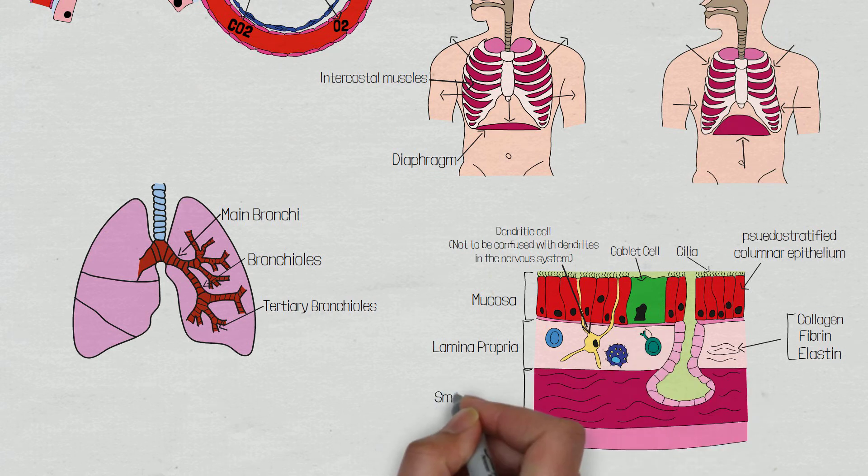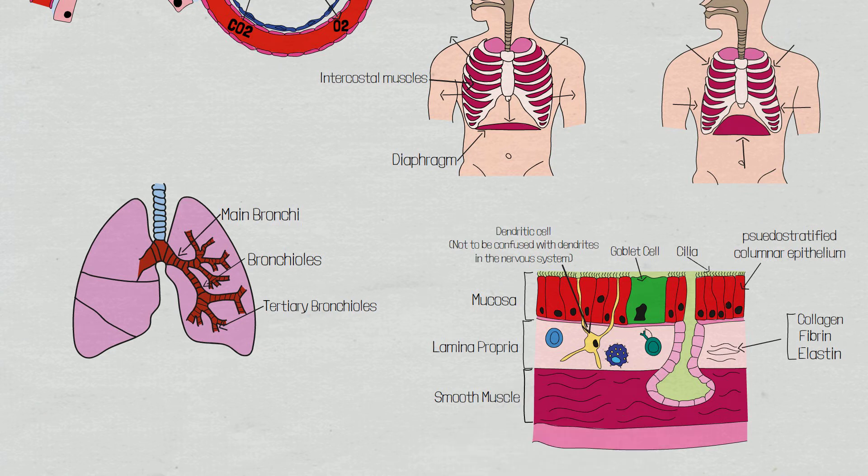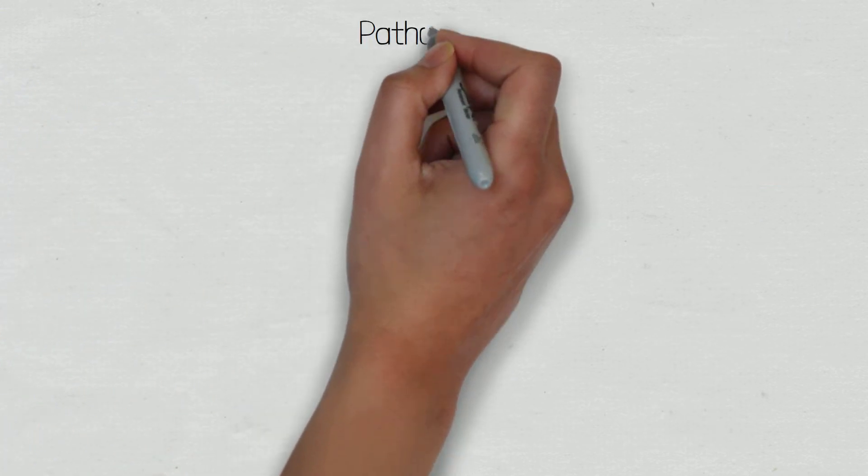Situated underneath the lamina propria is the bronchial muscle layer, and below this is the submucosa with the adventitia. So now we have an understanding of normal physiology, let's look at the changes seen in asthma.